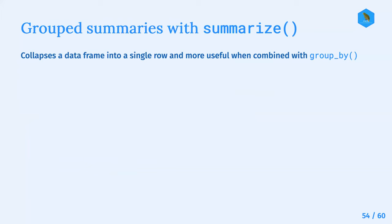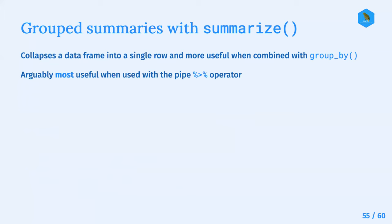The next segment is about grouped summaries using summarize. This collapses a data frame into a single row, and it's more useful when you combine it with group_by, which has been mentioned a couple of times. Arguably it's most useful when used with the pipe operator.